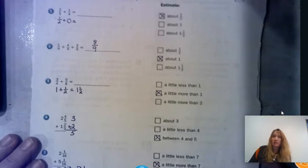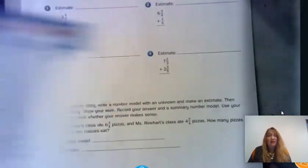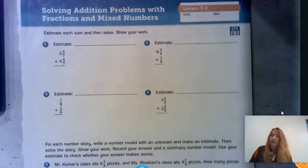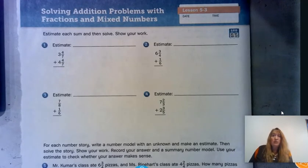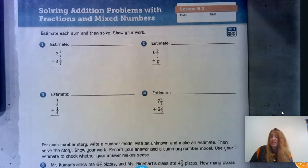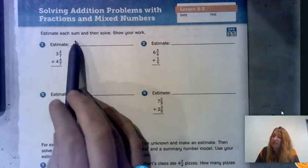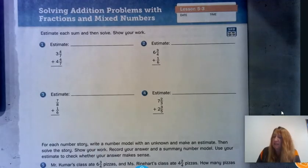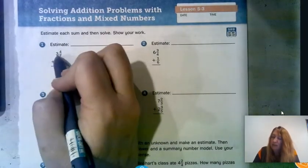You'll notice we didn't solve the ones without the same denominator, but we solved the ones that did and made good estimates for the others. Now let's look at Math Journal page 161. On this page we have mixed numbers to add, plus some fraction-only problems. We'll use common denominator strategies. We'll estimate each sum and then solve it, showing our work.